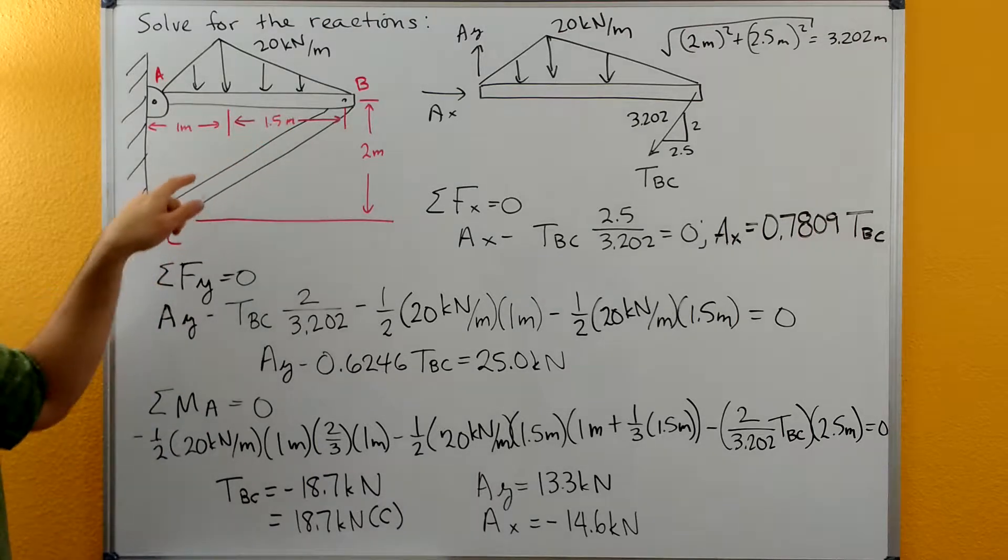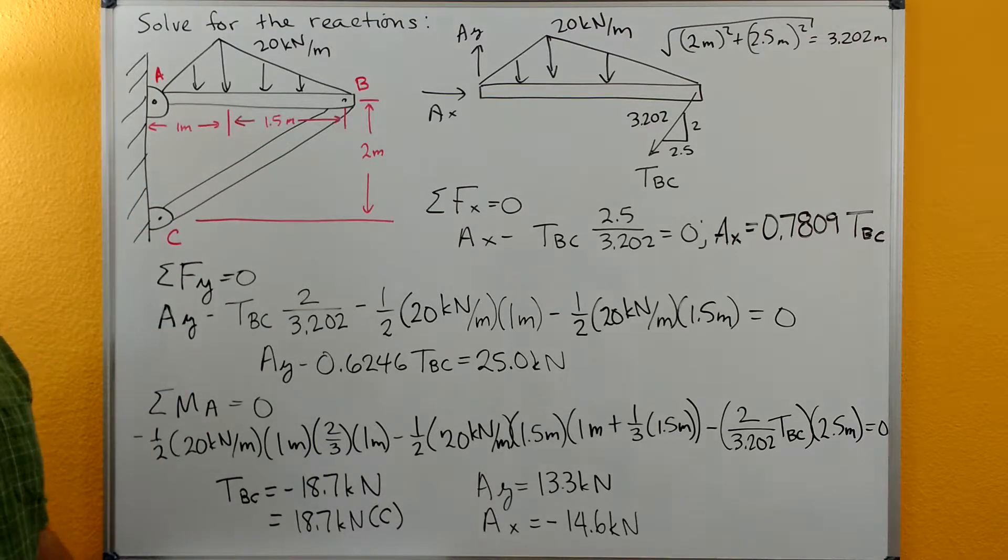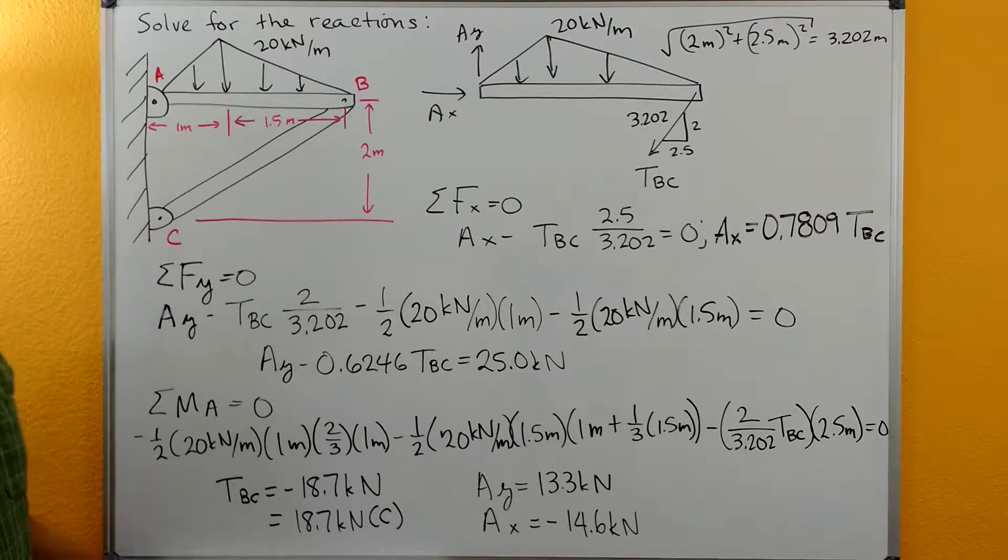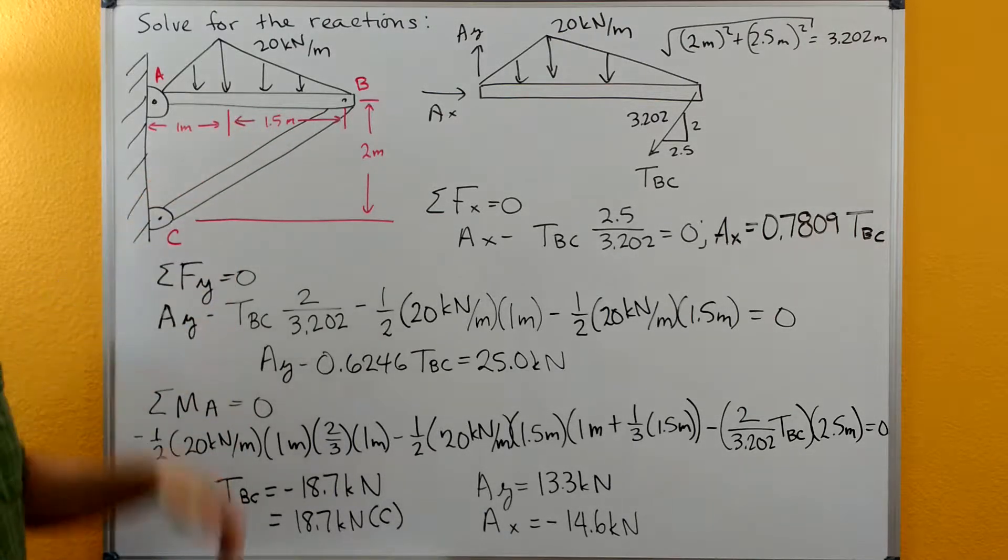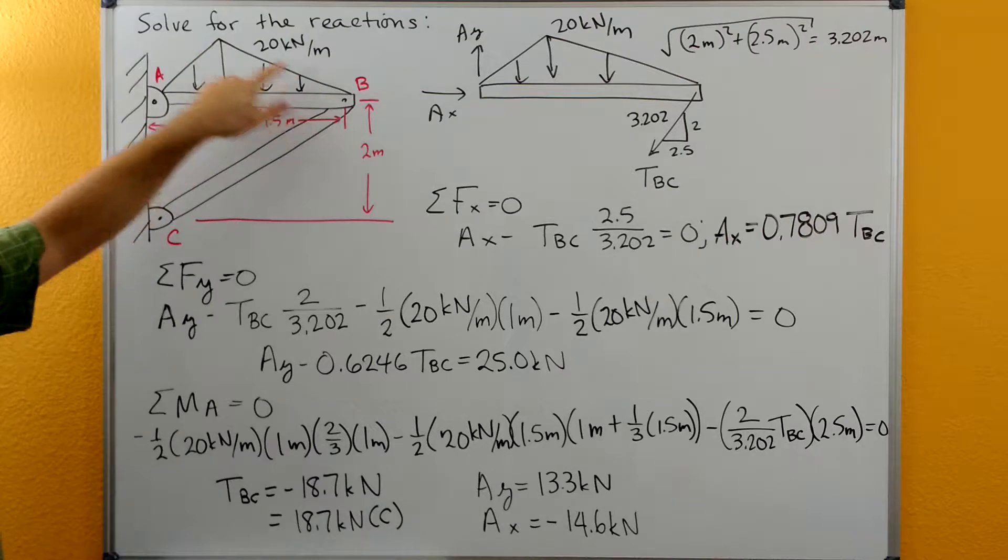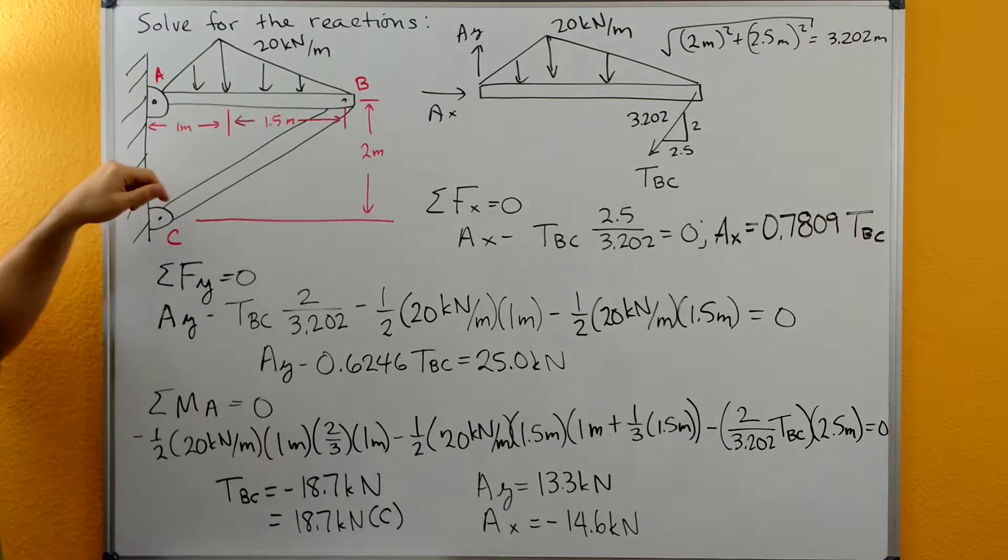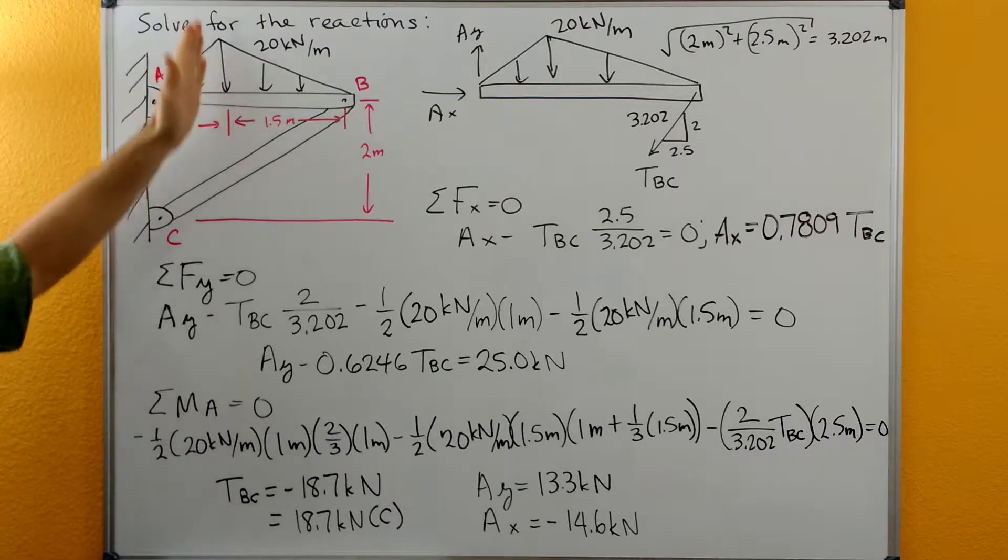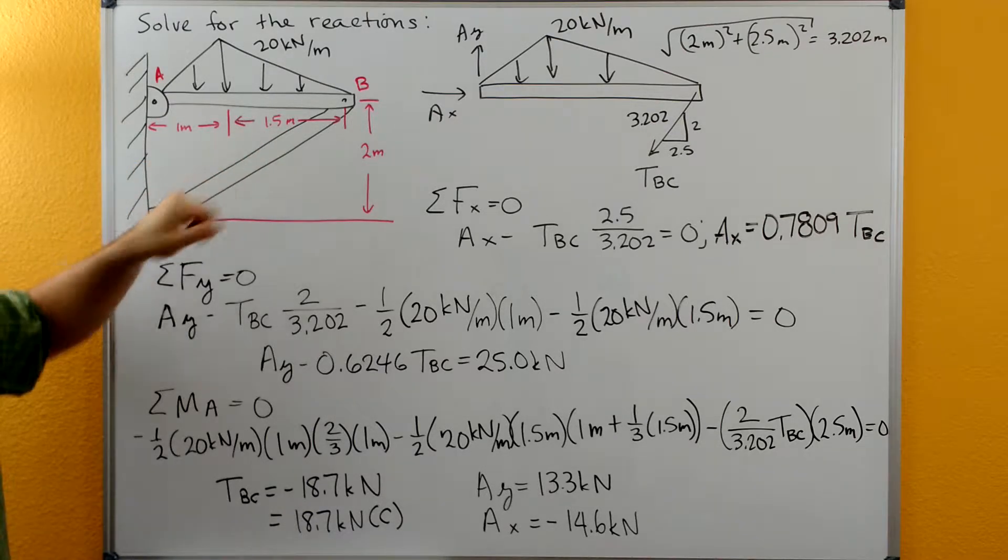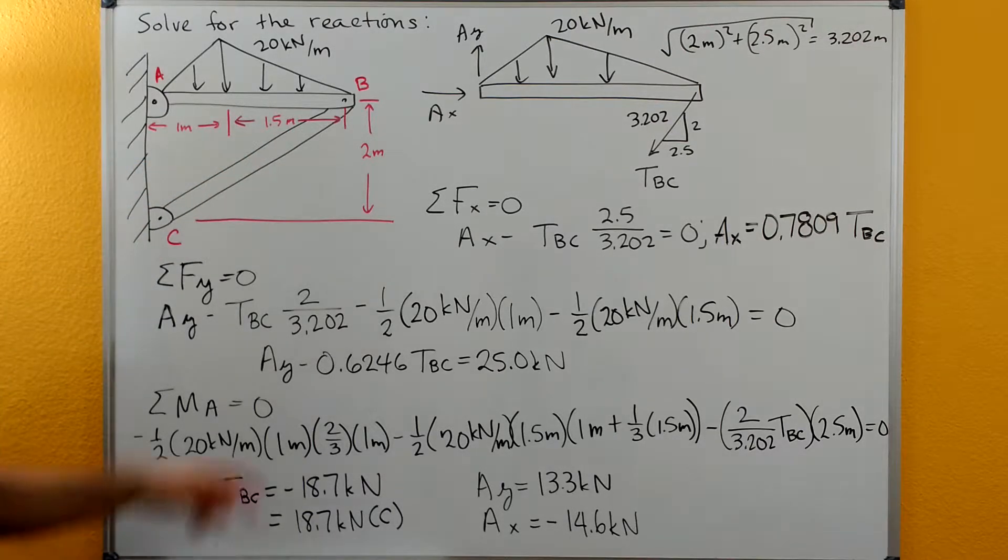Because the weightless link is weightless and B and C are both frictionless pins, this member here can only support either a tension or a compression. And then we have a distributed load that's 20 kilonewton per meter, it's triangular, the peak of the triangle is 1 meter over from A and 1.5 meters over from B. And then we have the height here from B to C.